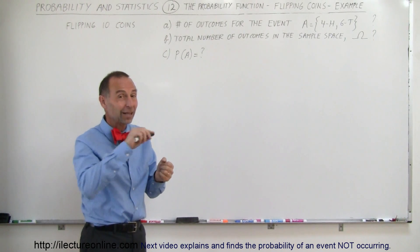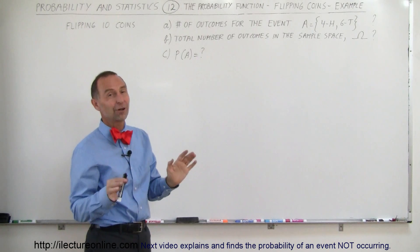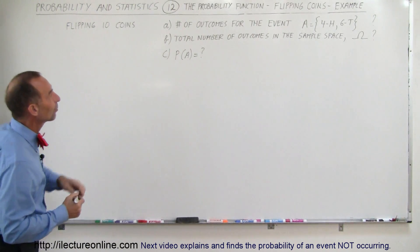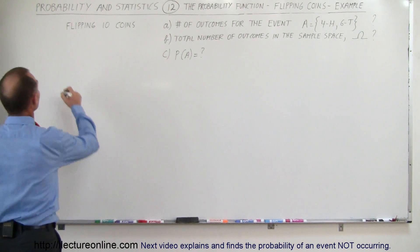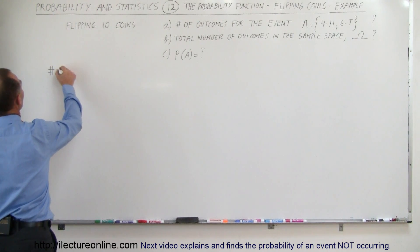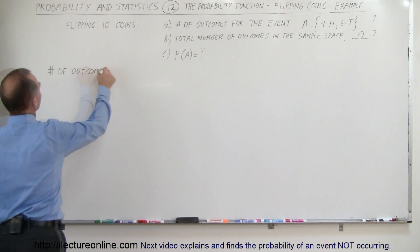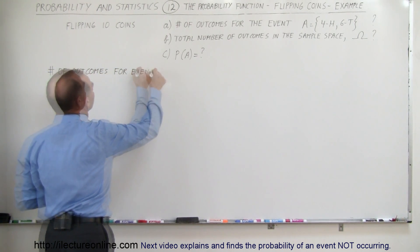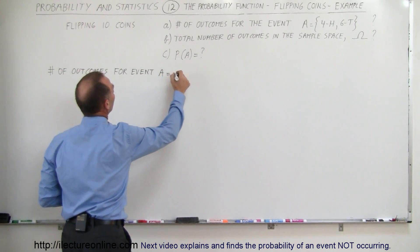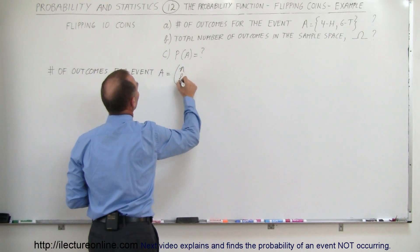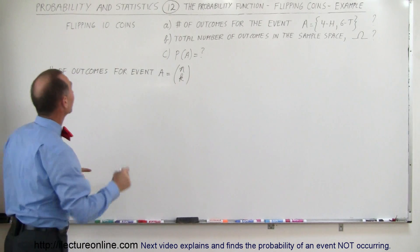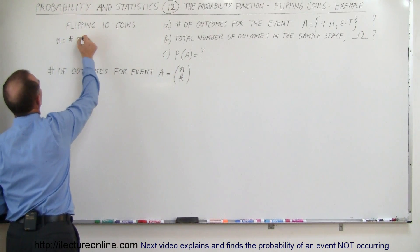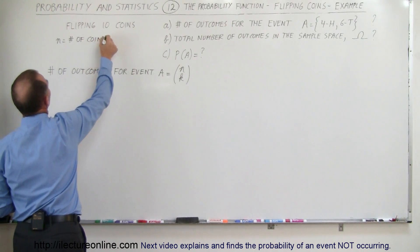If you were to write all that out from scratch, it would take a very long time, so having the general equation is really the way to go. The number of outcomes for event A can be found as follows: the number of outcomes for event A is equal to N over K. Remember what N represents — N is equal to the number of coins, so in this case N is 10.